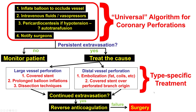What to do if a perforation happens is discussed separately in its own video, but the main first step is to inflate a balloon to occlude the perforated vessel. These are most commonly large vessel perforations, which usually require placement of a covered stent for sealing. Balloon alone is unlikely to achieve sealing; a covered stent is commonly needed.